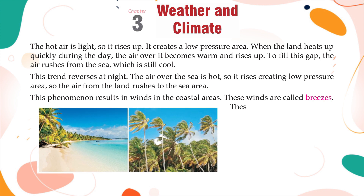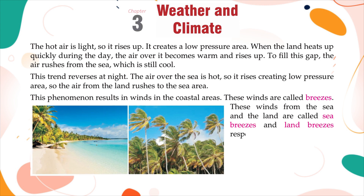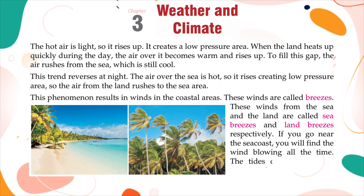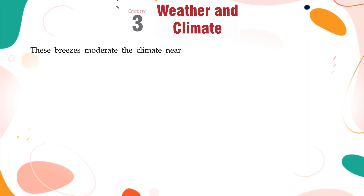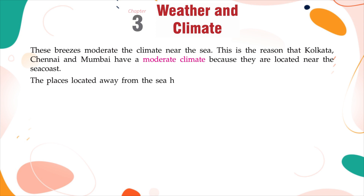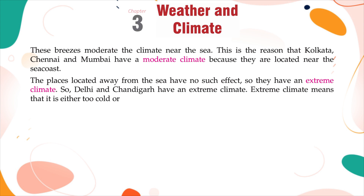These winds are called breezes. The winds from the sea and the land are called sea breezes and land breezes, respectively. If you go near the seacoast, you will find the wind blowing all the time. The tides occur in the sea owing to these breezes. These breezes moderate the climate near the sea. This is the reason that Kolkata, Chennai, and Mumbai have a moderate climate, because they are located near the seacoast. The places located away from the sea have no such effect, so they have an extreme climate. Delhi and Chandigarh have an extreme climate — meaning it is either too cold or too hot there.